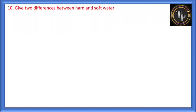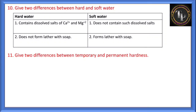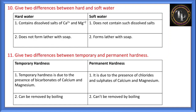Difference between hard water and soft water: hard water contains dissolved salts of calcium and magnesium. Soft water does not contain such dissolved salts. Hard water does not form lather with soap, but soft water can form lather with soap. Difference between temporary and permanent hardness: temporary hardness is due to bicarbonate salts of calcium and magnesium; permanent hardness is due to chlorides and sulfates of calcium and magnesium. Temporary hardness can be removed by boiling, but permanent hardness cannot be removed by boiling — it requires specific processes.